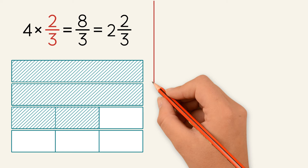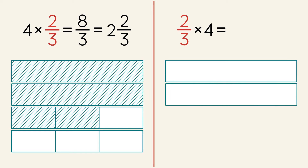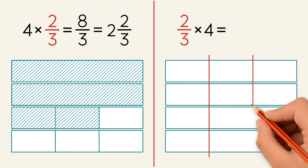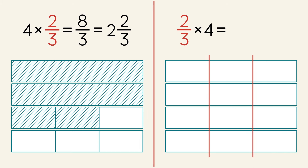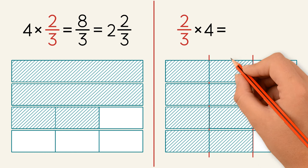Now let's do the same equation, but we'll flip the factors. Now we have two-thirds times four. When we multiply two-thirds by four, it means we are finding two of three parts of a group of four. Let's draw it out. We have four groups and we split the groups into three parts. We shade two parts. Once again, we have eight-thirds shaded.